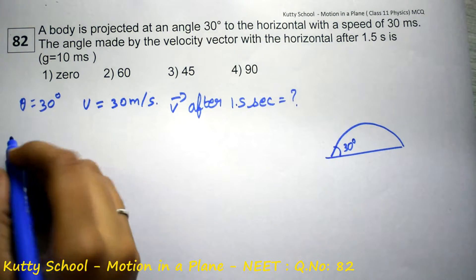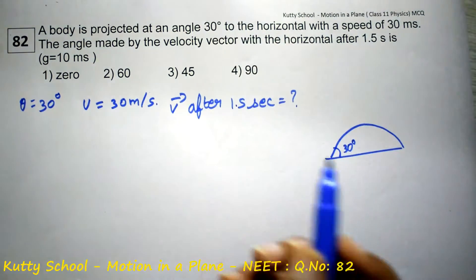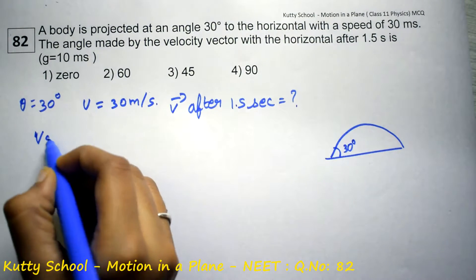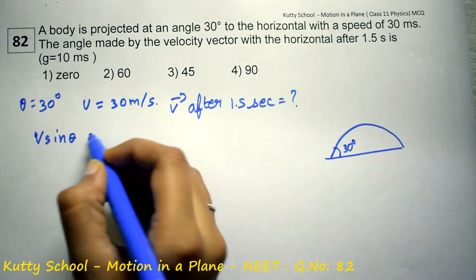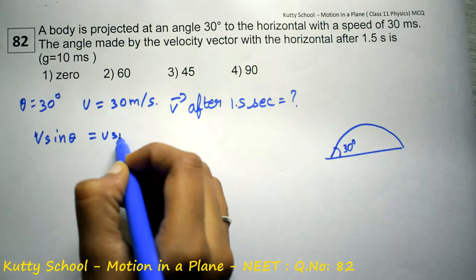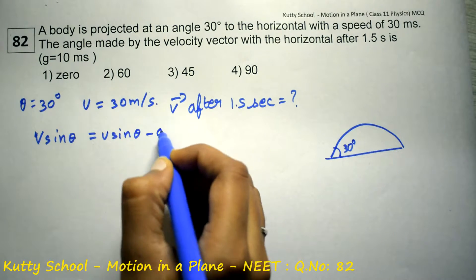So by formula, v sin theta is equal to u sin theta minus gt.